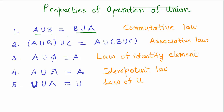You will get the same set no matter in whichever order you do this operation. Now the associative law: when you are looking at more than three elements and doing the operation of union on more than three elements, it doesn't matter how you group them. Let's say you want to combine three sets — in the first instance you combine A and B, and then the resultant set of A union B you do the operation of union with set C.